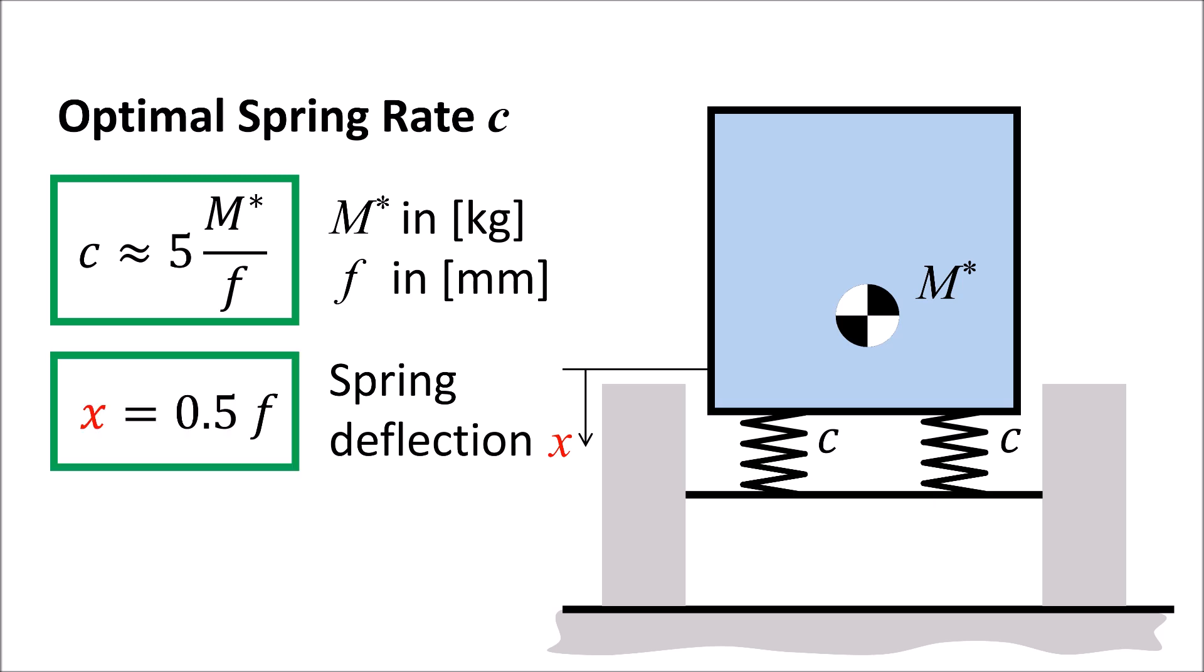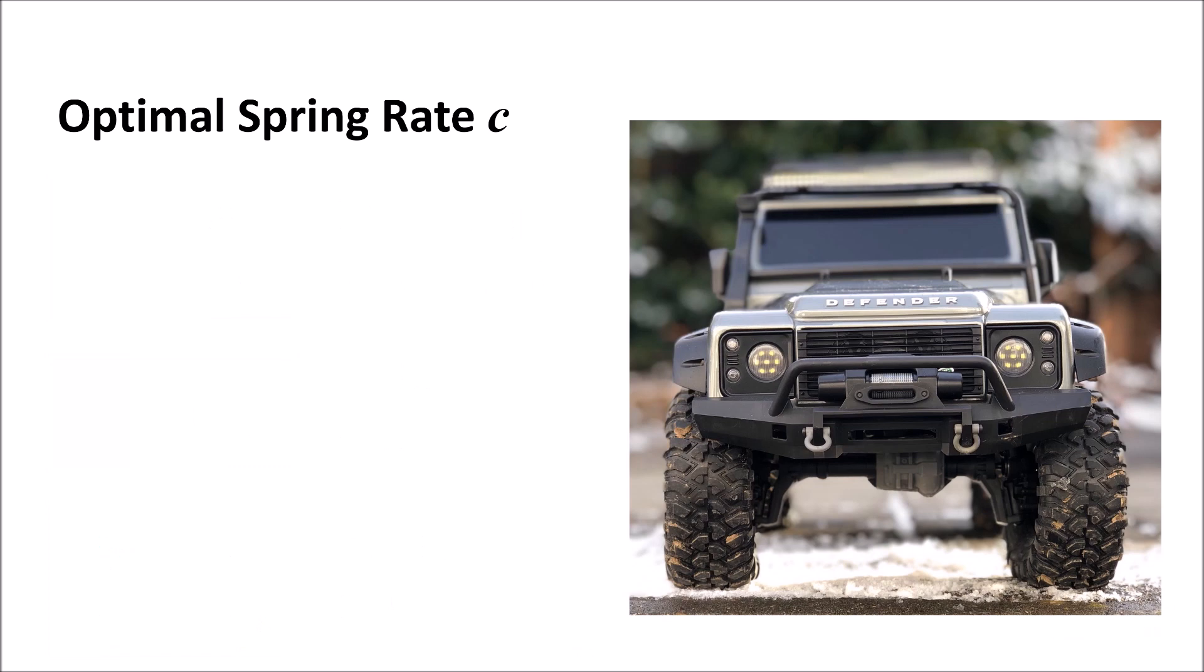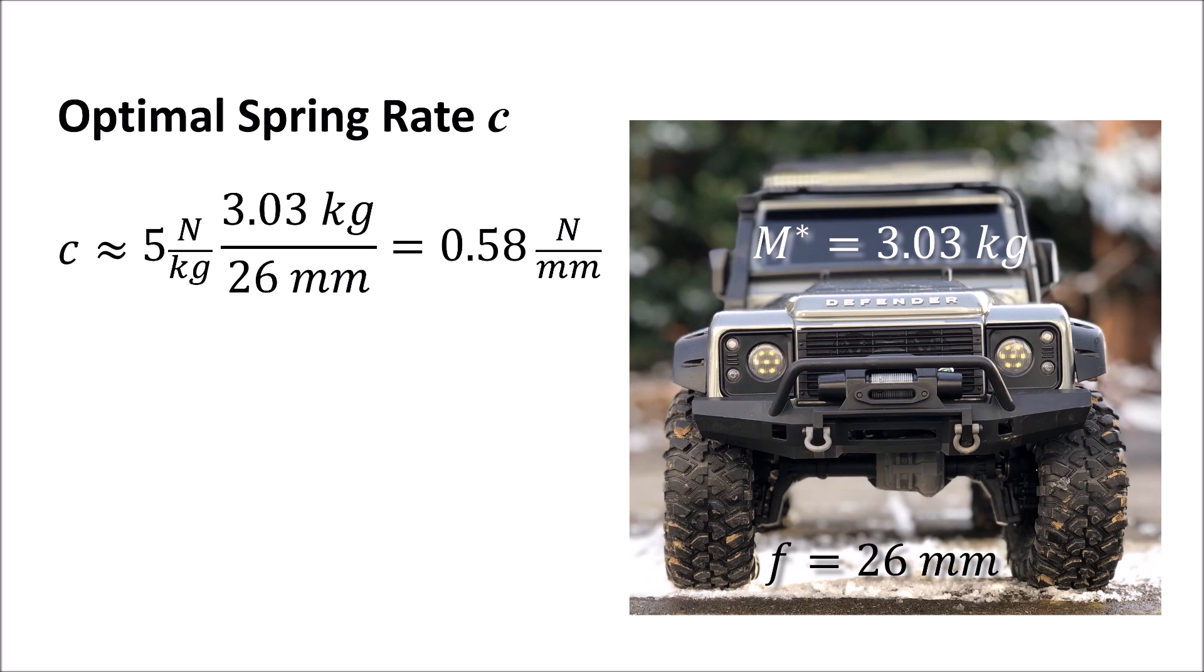Different frontal and rear spring rates can be chosen in order to compensate for different loads at frontal and rear axles. Here you see some typical values we obtain for the Traxxas TRX-4 Defender.